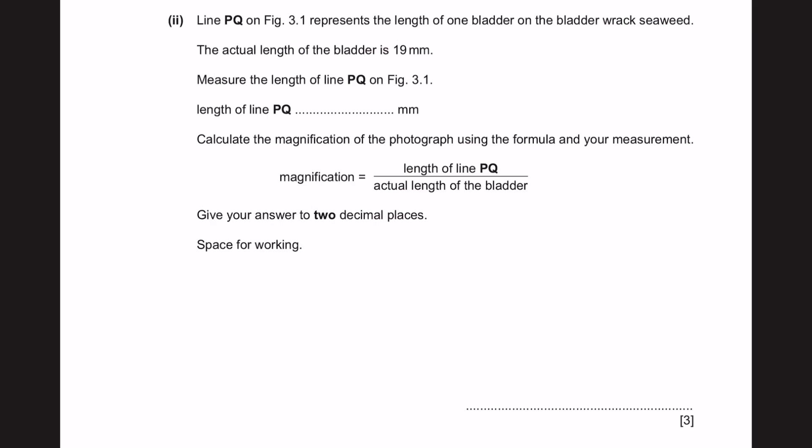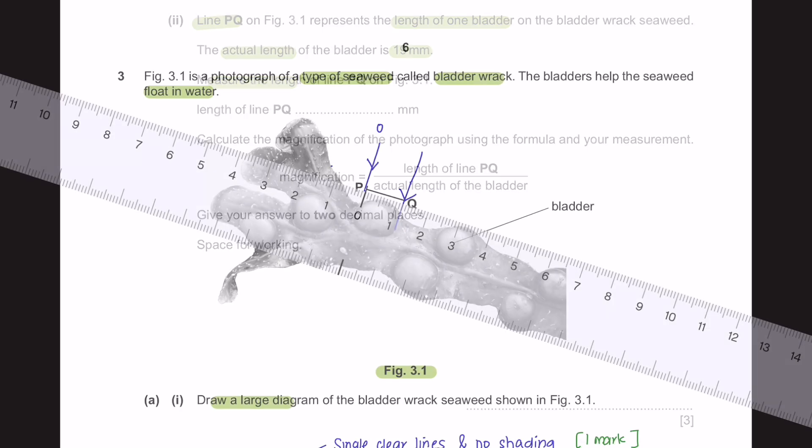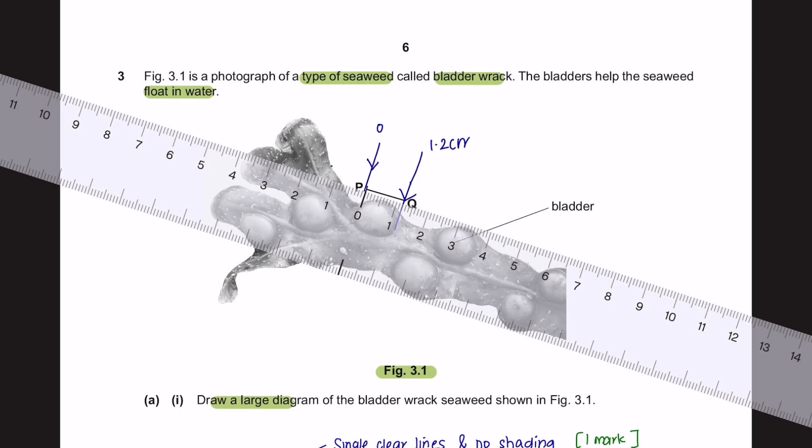Next, part 2. Line PQ on figure 3.1 represents the length of one bladder on the bladder rack. The actual length of the bladder is 19 mm. Measure the length of line PQ on figure 3.1. I have obtained a measurement of 1.2 cm.